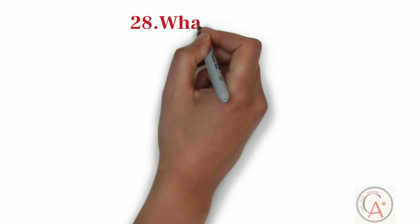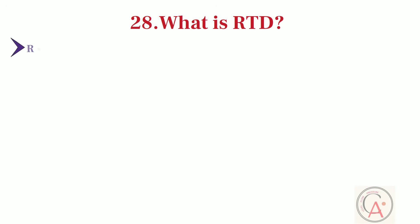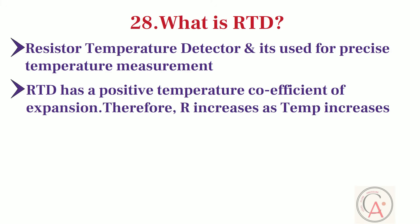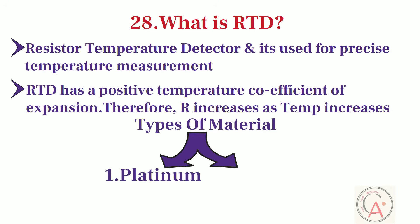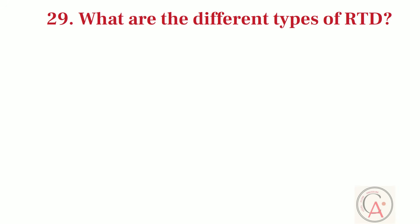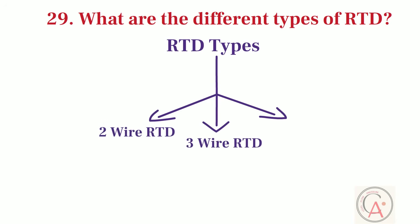Next question is, what is the RTD? RTD is resistor temperature detector, and it is generally used for precise temperature measurement. RTD has positive temperature coefficient of expansion. It means resistance of RTD increases when the temperature increases. Based on material, RTD has two types. First type is platinum. And second type is nickel. Second last question is, what are the different types of RTD available in the market? There are mainly three different types of RTD. First type of RTD is a two-wire RTD. Second type of RTD is a three-wire RTD. And third type is four-wire RTD.